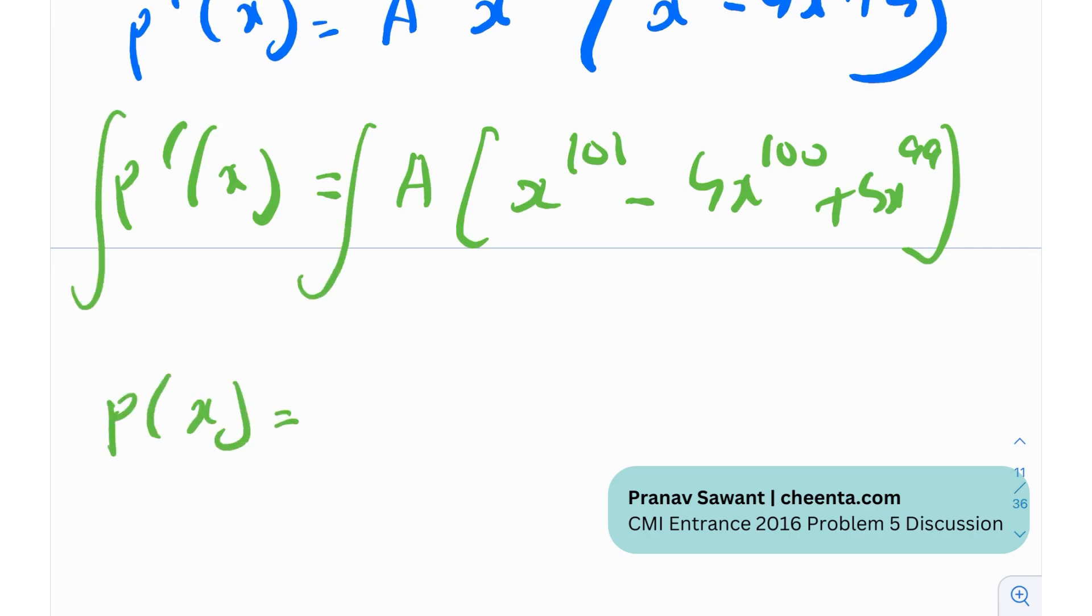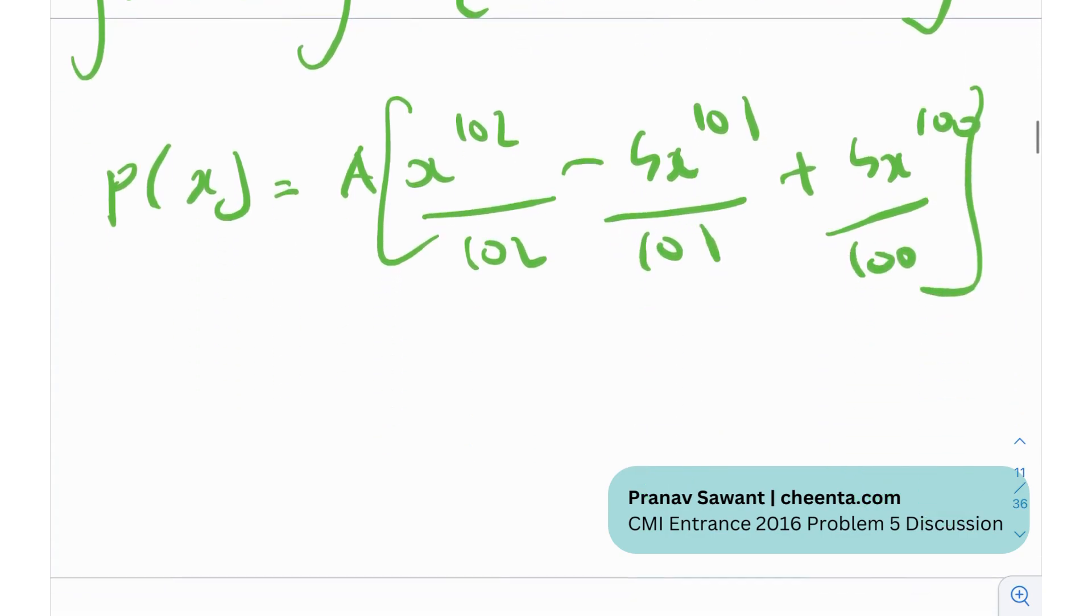After this point we do nothing but integrate both sides so if I just integrate both sides I'll get p of x is equal to a times x to the 102 by 102 minus 4 x to the 101 by 101 plus 4 x to the 100 by 100 and if you're having any doubts what I'm doing over here it's nothing but the integration of x to the n dx which is nothing but x to the n plus 1 over n plus 1 that's essentially what I'm using over here and obviously never to forget the constant of integration it's an indefinite integration you can never afford to forget that.